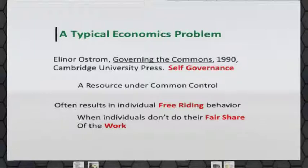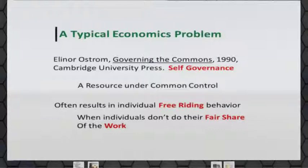Ostrom won the Nobel Prize in economics for studying these systems in the field and the laboratory, and there's been a lot of research done. The question she asked is: even though this is a dilemma problem — similar to work on the Prisoner's Dilemma game — this is a problem of self or group governance. How do groups govern each other? How do we maintain self-control and not engage in free-riding behavior so we can cooperate?